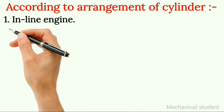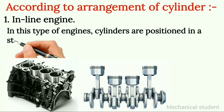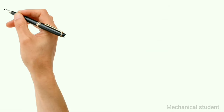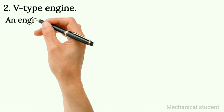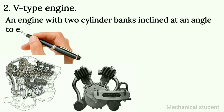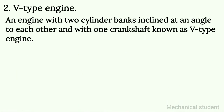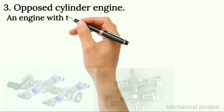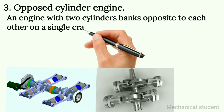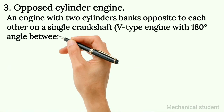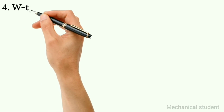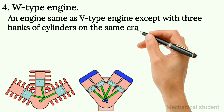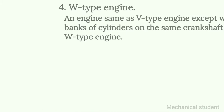According to arrangement of cylinders. 1. Inline engine: in this type of engine, cylinders are positioned in a straight line one behind the other along the length of the crankshaft. 2. V type engine: an engine with two cylinder banks inclined at an angle to each other and with one crankshaft. 3. Opposed cylinder engine: an engine with two cylinder banks opposite to each other on a single crankshaft, with a 180-degree angle between banks. 4. W type engine: same as V type engine except with three banks of cylinders on the same crankshaft.